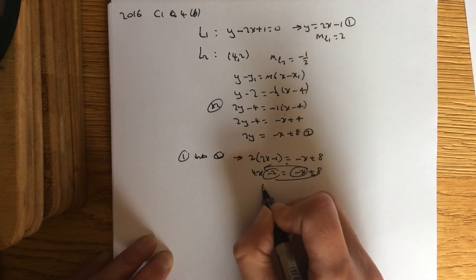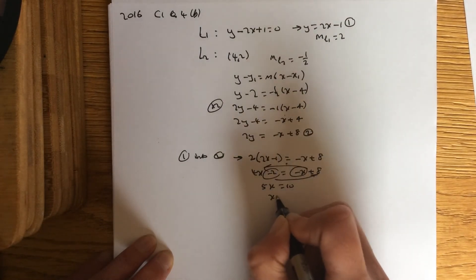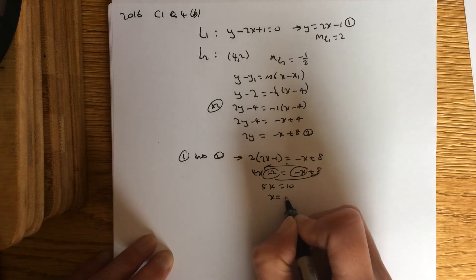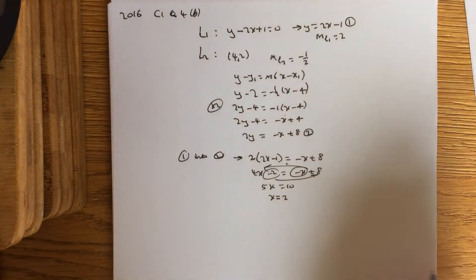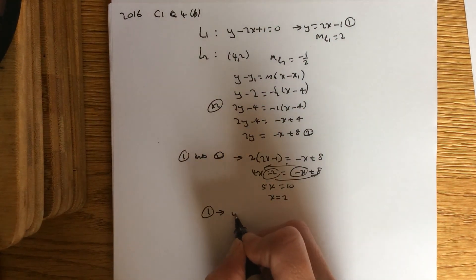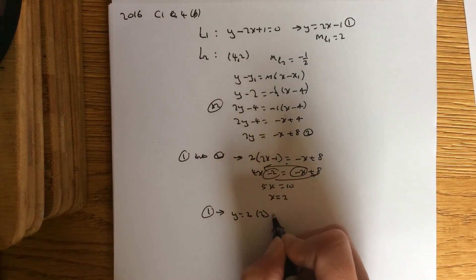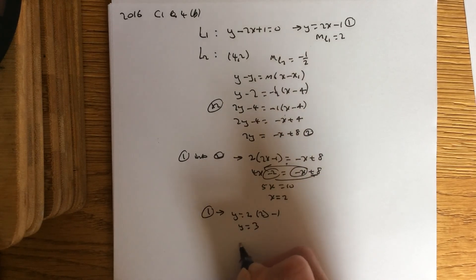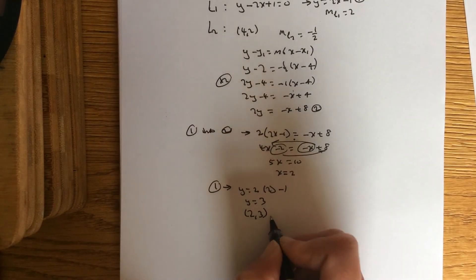Letters one side, numbers the other. 5x equals 10, x equals 2. Now, you want to have the coordinates, so you need to find the y coordinate. Subbing it back into equation 1 is the easiest way of doing that. So y is 2 times x minus 1, so y is 3. So the point of intersection is 2, 3.